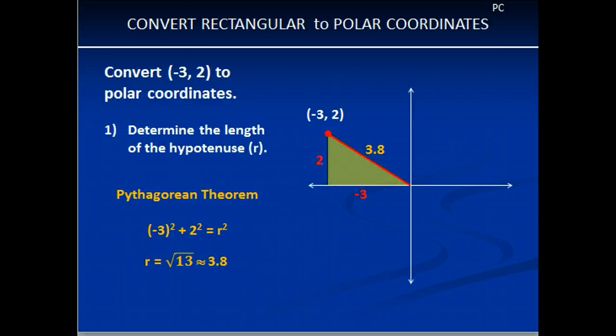So let's say we're going to convert (-3, 2) to polar coordinates. That's really the first thing you have to do. It's really simple, you're going to plot the points. Well, where would they be? What quadrant are they in? It's going to be here in the second quadrant.